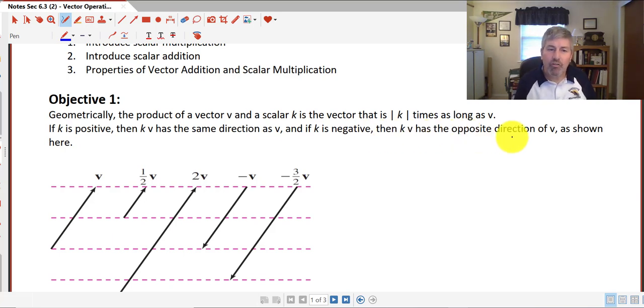And we can tell the direction by the arrows. So super important, we take a look at the arrows. So for v, you can see here one half of v is going in the same direction and its vector has half the magnitude, where 2v has double the magnitude of v.